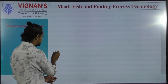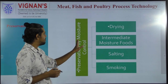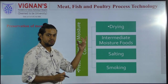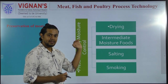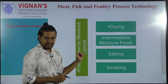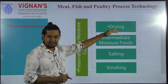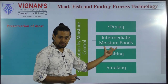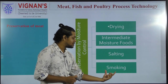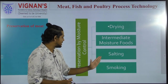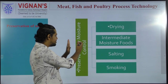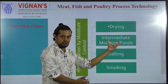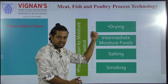The first category is preservation by moisture control. The different types of preservation techniques that reduce moisture content, thereby reducing the growth of microorganisms, include drying, intermediate moisture foods, salting, and smoking. These are the individual types which belong to the category of preservation by moisture control.